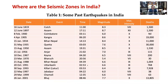The 1819 Kutch earthquake produced a three-meter high uplift of the ground for over 100 kilometers stretch, and it was named Allahbund. The 1897 Assam earthquake caused severe damage as far as 500 kilometers away from the epicenter, and this type of damage led to improvements in the intensity scales. Extensive liquefaction of the ground was observed over a length of more than 300 kilometers during the 1934 Bihar-Nepal earthquake, in which many structures went afloat.